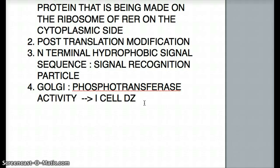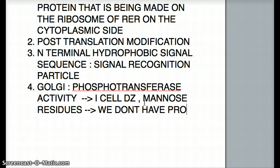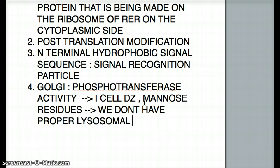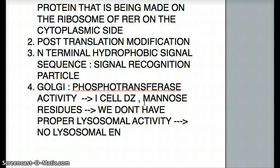This is where I-cell disease is important. When phosphorylation by phosphotransferase activity does not happen, the mannose residues kind of float around in the cell and we don't have proper lysosomal activity, because there are no lysosomal enzymes reaching the lysosomes. That's when we have I-cell disease and all the features that come with it. This is a dynamic way to understand how these concepts connect across different topics.